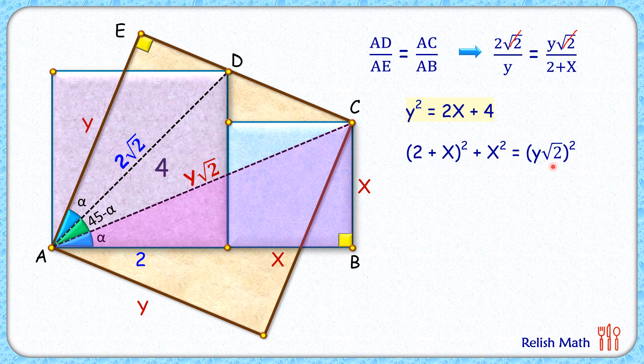Opening up the brackets on both sides by applying the (a+b)² formula, we get this relation. Here y² value is 2x+4, so we can replace y² with 2x+4. Simplifying on both sides, the LHS is 2x² and the RHS we open up the bracket.